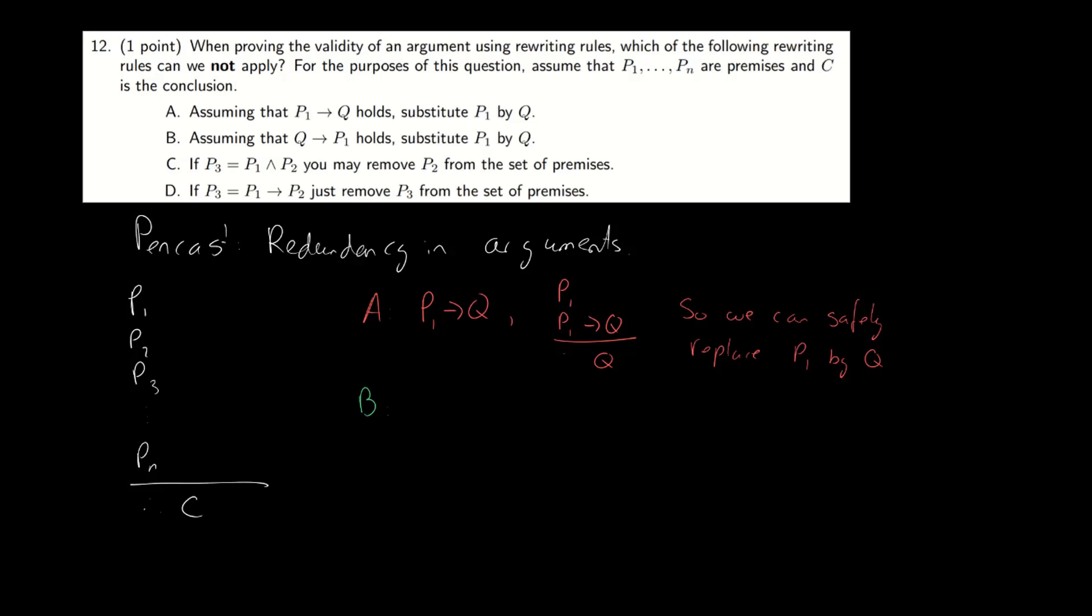Now, what about the second one? Assume that Q implies P1 holds. Substitute P1 by Q. Well, the argument P1, Q implies P1, therefore Q is invalid.